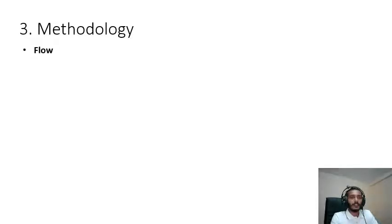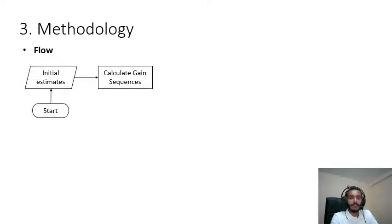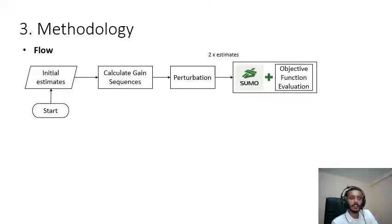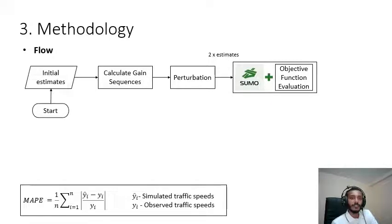Let's see how SPSA has been used in the calibration process. First, we need initial estimates for the model parameters that we try to calibrate. Using the hyperparameters of SPSA, we calculate gain sequences and use this to perturbate the initial estimates and get two sets of intermediate estimates which will be passed into SUMO and evaluate the objective function. In this study we've used mean absolute percentage error as our objective function where we use observed and simulated traffic speeds to calculate the error.